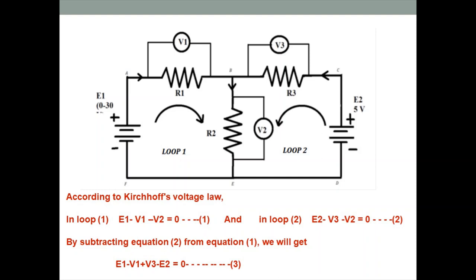This is our experimental circuit — a more complicated circuit for Kirchhoff's Voltage Law. We are using two power supplies, E1 and E2. E2 will be kept constant while E1 is a variable power supply that can vary from 0 to 30V, and we will take 4–5 readings.